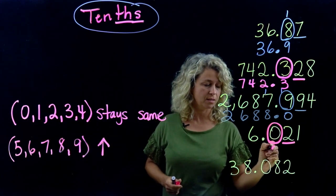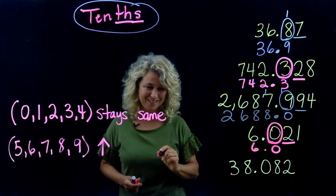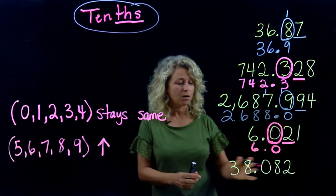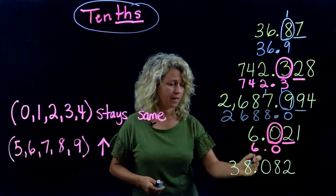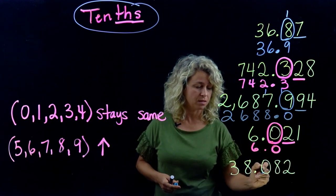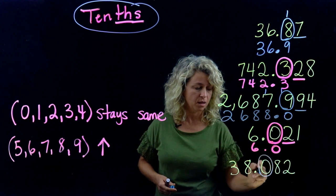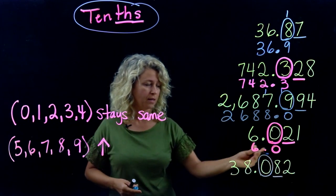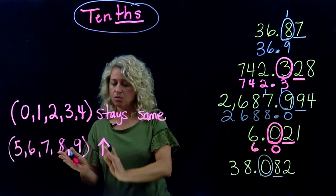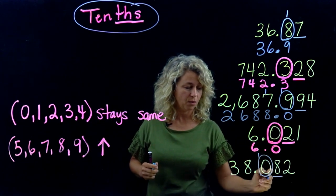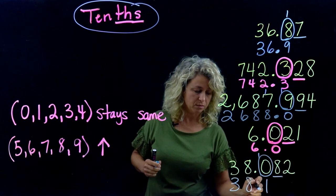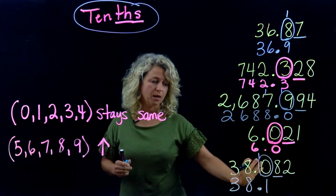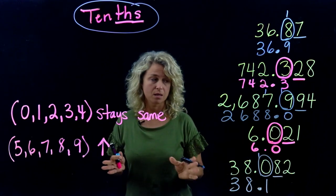Our last example is 38.082. We'll round to the tenths place. Eight—that's right here, so we're going to round up. Add one to the zero, it becomes a one, and just bring these numbers down.